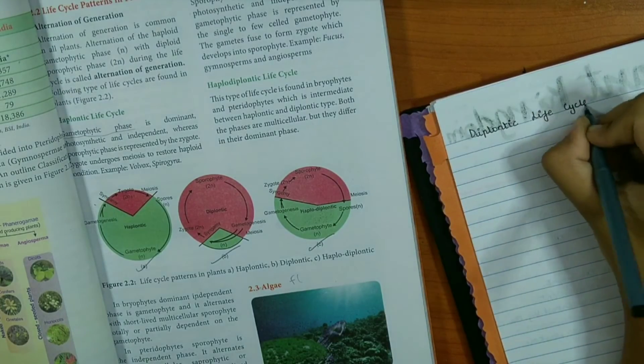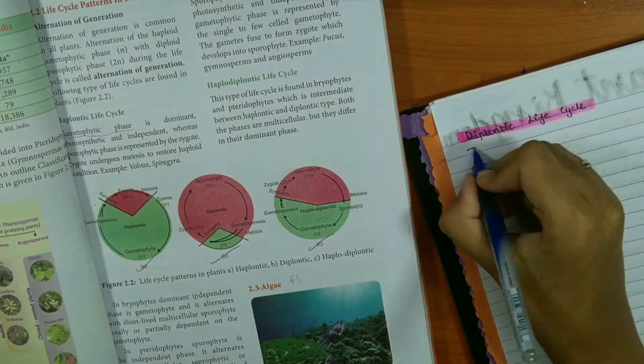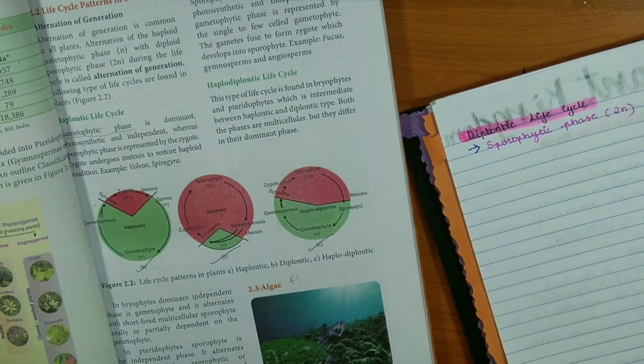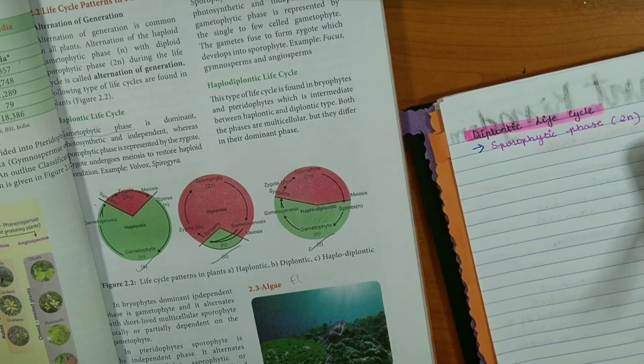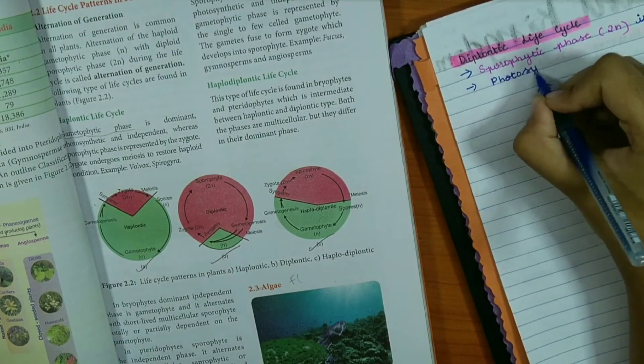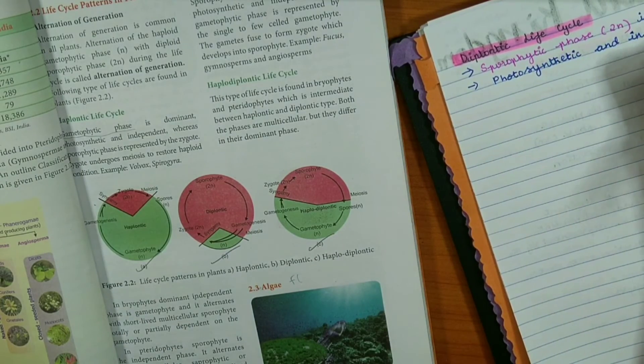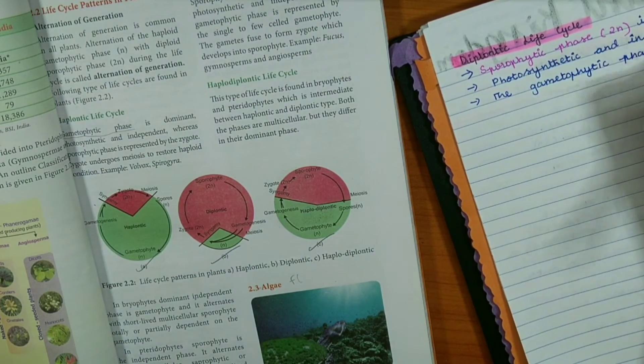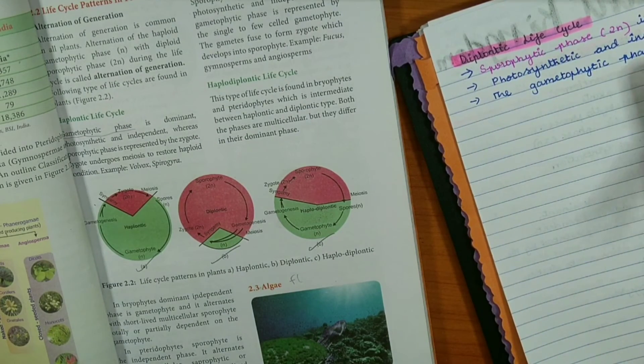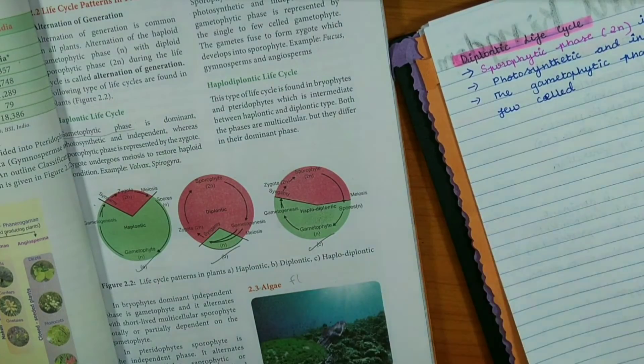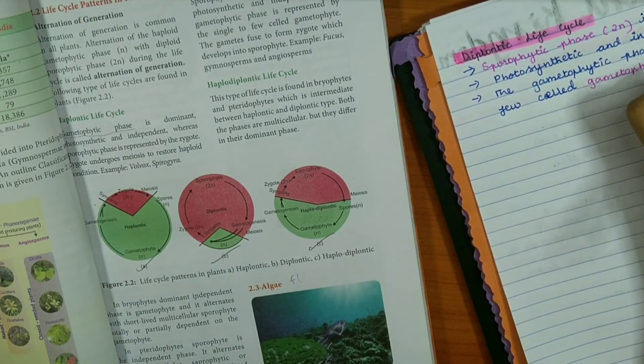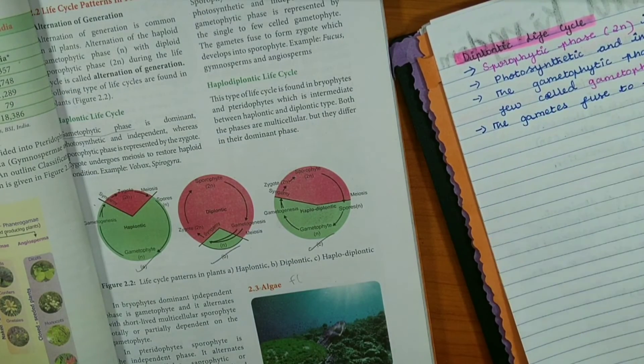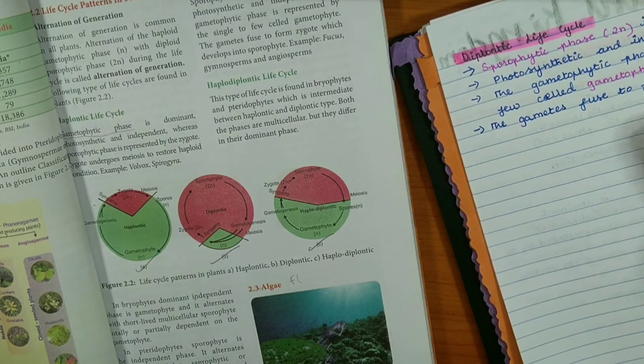After I finish taking my notes, I would just go through them once again so that I get a good idea about the chapter and the important stuff that I should learn. Then after two to three days, I would come back to my notes and revise them once again. At that time while I revise, I would mark the very important stuff with my red pen.